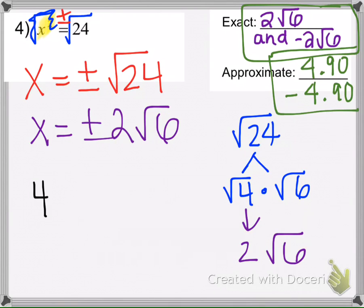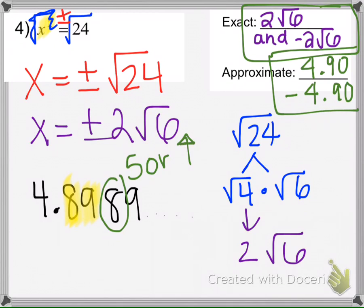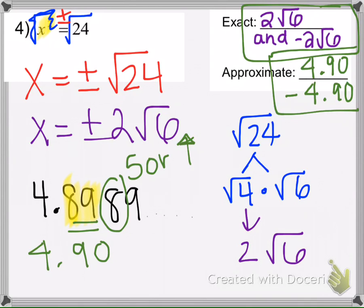Your calculator will show 4.8989 and so on. Since the directions say hundredths place, we want two decimal places. Since the third digit is 8 — which is 5 or higher — the 89 rounds up to 90. So always look at the third decimal digit to decide whether to round up or leave it.